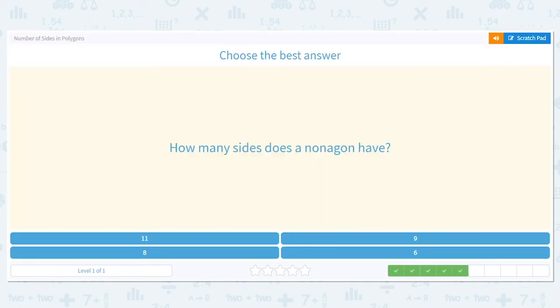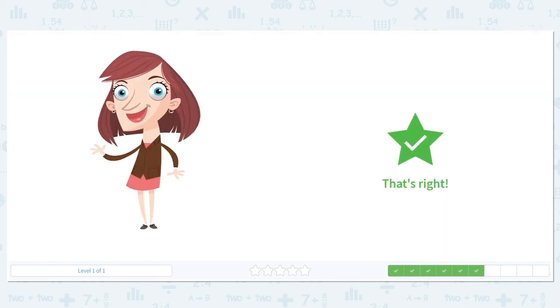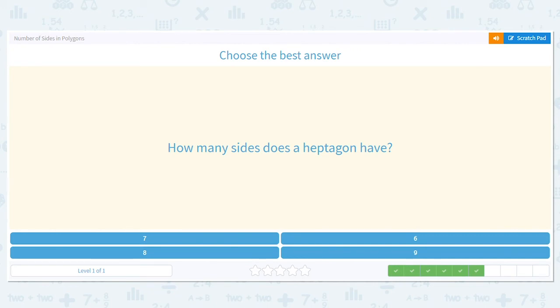How many sides do we say a nonagon has? Nine. How do we know that? Because of non. Non equals nine. How about this one? How many sides does a heptagon have?